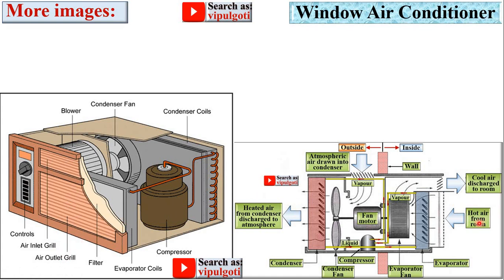So here you can see hot air in. So this is the hot air in and then this one is the cool air out. And here evaporator is there and backside condenser coils are there. This one is the compressor.